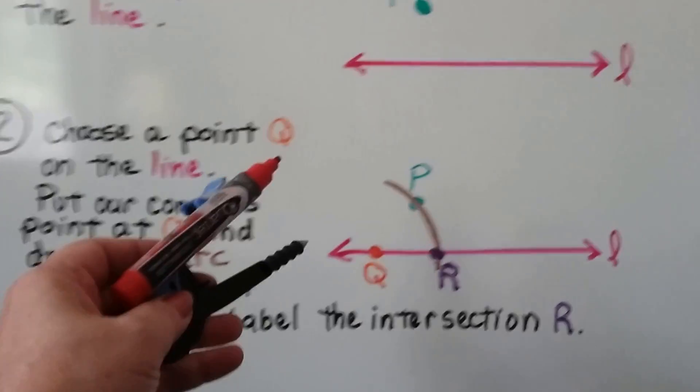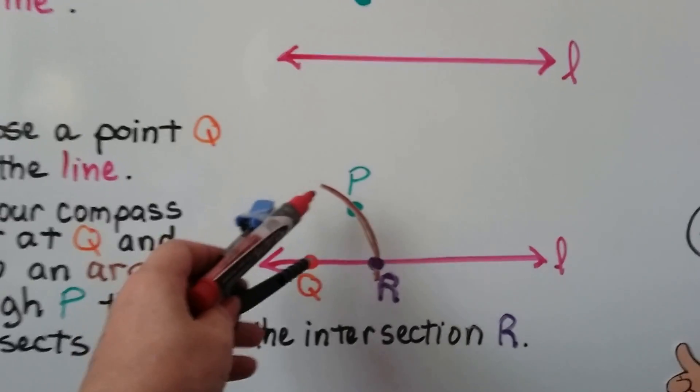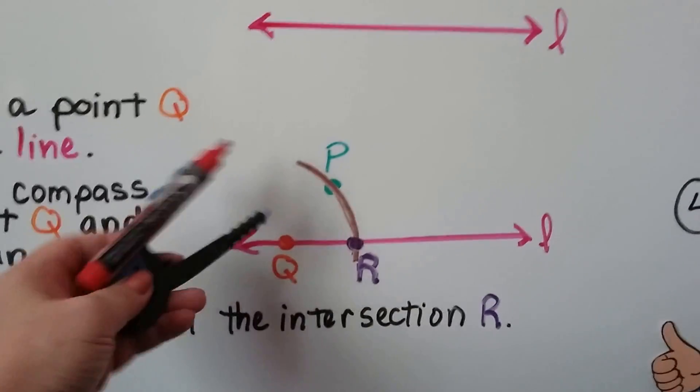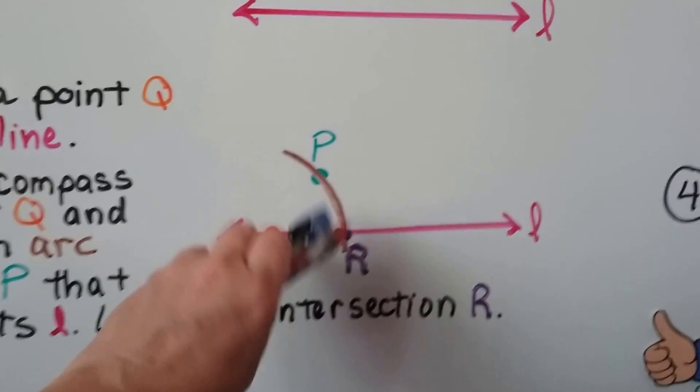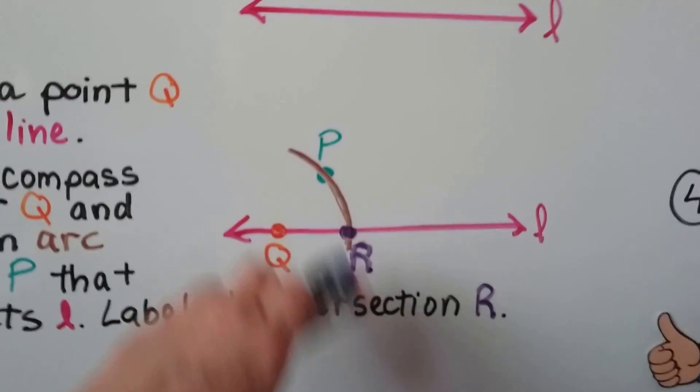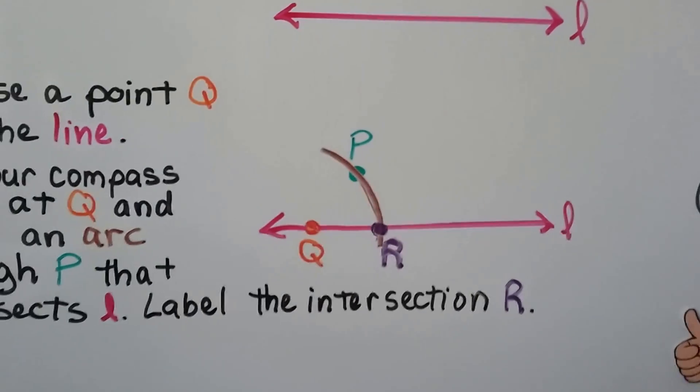So all we did was make a point Q on this line L. We put the tip, the point of the compass there, and we draw our arc through P and through L and we mark that as R.